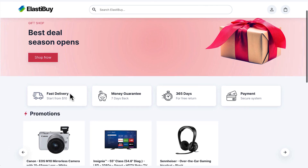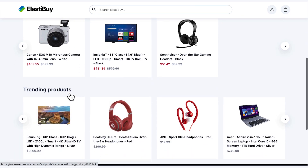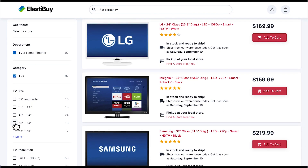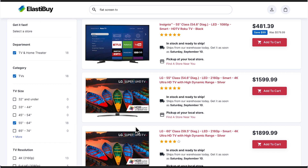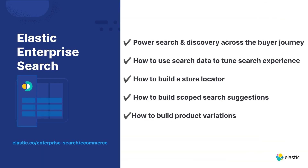In this video, we showed how Elastic Enterprise Search can be used to power product search and discovery across the buyer journey. Check out our technical video series for more information about how to build scoped search suggestions, product variations, and a store locator.